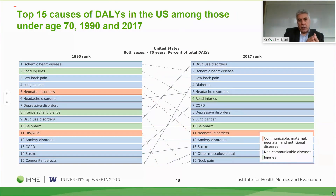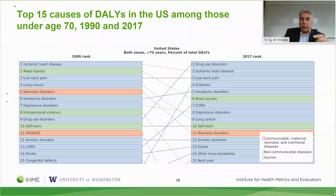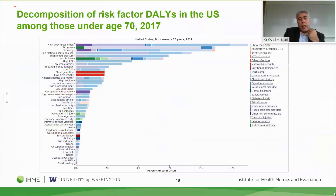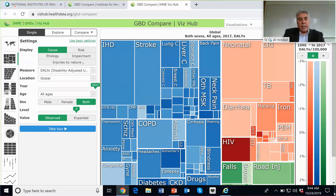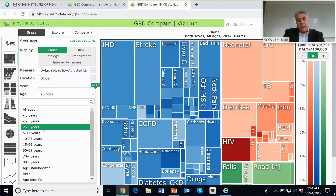Looking at DALYs—disability and mortality combined—drug use disorder is number one, ischemic heart disease becomes number two, then back pain, and diabetes is surprisingly number four, having increased tremendously from 1990 to 2017 as a result of obesity and elevated glucose. This is one way we do what we call decomposition of risk factors, showing what high body mass index is contributing to premature DALYs. Let me now switch the screen to show you how you can get this data and what visualizations we have.